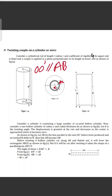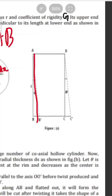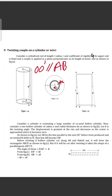Before twisting, if the hollow cylinder is cut along AB and flattened out, it forms a rectangle. After twisting, AB moves to AB'. If we open the cylinder, we see it in a rectangle shape ABCD.